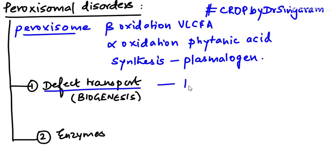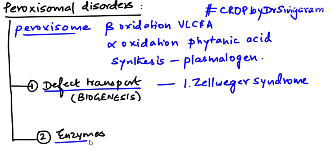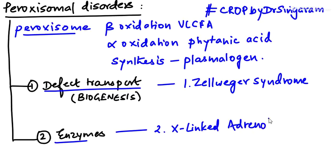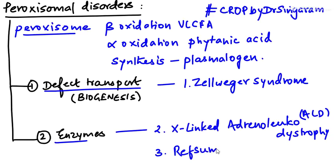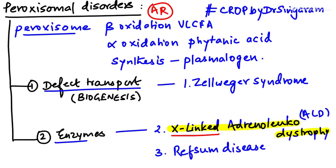The classical example for the first group — defect in transport — is Zellweger syndrome. For the second group — disorders of peroxisomal enzymes — the two classical disorders are X-linked adrenoleukodystrophy (ALD) and Refsum disease. In general, all peroxisomal disorders are autosomal recessive except adrenoleukodystrophy, which is X-linked recessive. The most common peroxisomal disorder is X-linked adrenoleukodystrophy.